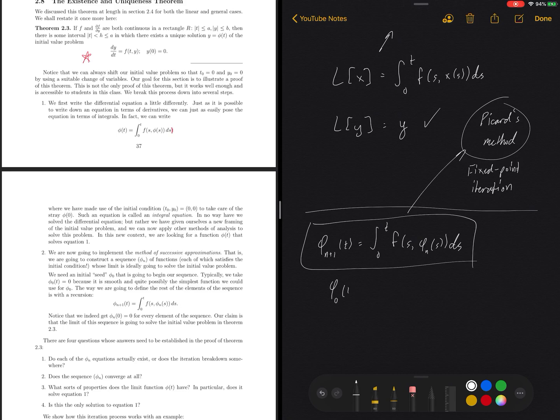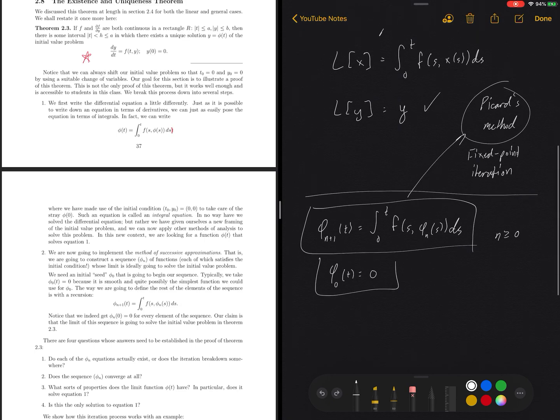I'm going to create a whole bunch of functions: φₙ₊₁(t) is going to equal the integral from 0 to t of f(s, φₙ(s)) ds. And this is Picard's method here.